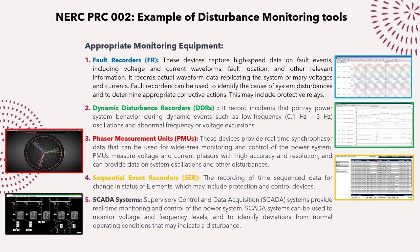Dynamic disturbance recorders capture incidents that portray power system behavior during dynamic events such as low-frequency oscillations and abnormal frequency or voltage excursions. Phasor measurement units provide real-time synchrophasor data for wide-area monitoring and control of the power system. PMUs measure voltage and current phasors at very high accuracy and resolution, allowing monitoring of angular separation across the power system and providing a complete dynamic overview of the entire system — showing how generators, loads, and all elements behave dynamically during faults or disturbances.